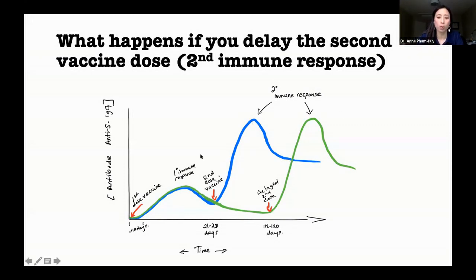And then eventually, if you were to measure these antibodies over time, they would slowly wane, plateau, and eventually be at fairly low levels. But what happens if you actually extended this second dose? So instead of giving it here, you decide to give it at 112 days or 120 days. This is the four month delay.